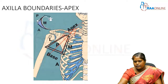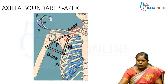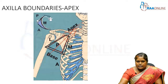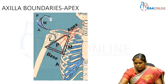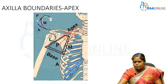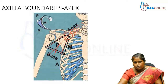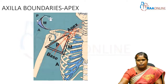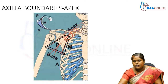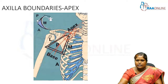This is the neck region, towards the root of the neck. Now this apex is truncated, as we discussed earlier. This apex is known as the cervico-axillary canal. It is a passage between the neck, that is the cervical region, and the axillary region — a passage through which structures pass from the neck region to the axillary region.